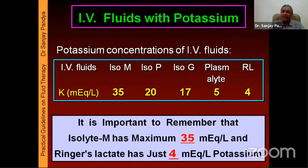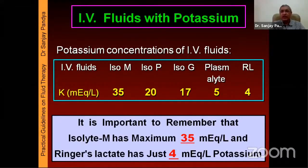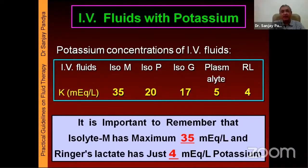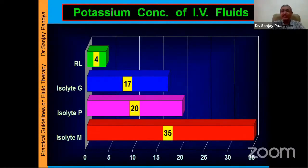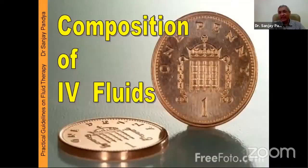Likewise, for some patients, we want to give more potassium. The question arises: out of commercially available fluids, which are the potassium-containing fluids? The answer is that all isolytes are rich in potassium. Maximum potassium is with Isolyte M, then comes Isolyte P and Isolyte G. But practically for day-to-day purposes, we don't use isolyte fluids, and therefore if we need to provide potassium, we have to give it in separate ways. In summary, the maximum potassium lies with Isolyte M at 35 mEq, and a fluid like Ringer's lactate has just 4 mEq of potassium. Therefore, if we are giving Ringer's lactate, normal saline, or DNS, it is important to ensure we provide an adequate amount of potassium separately.